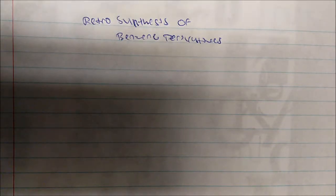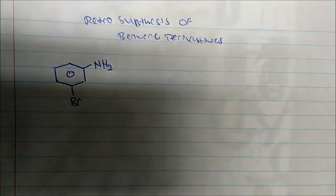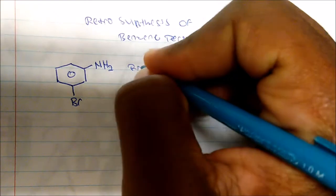In this video, I want to talk about the retrosynthesis of benzene derivatives. Typically on an exam, you're given a molecule and asked to make it from a certain starting point. So what if we're given the instructions to make m-bromo-aniline from benzene?